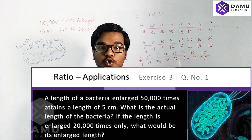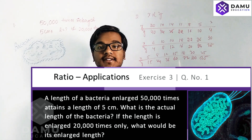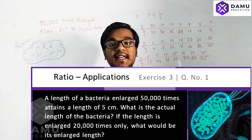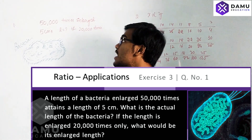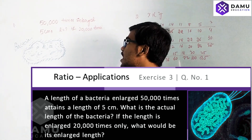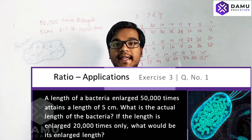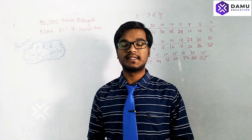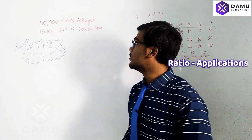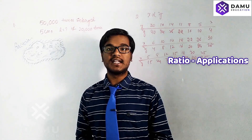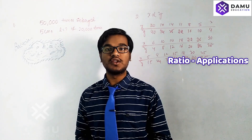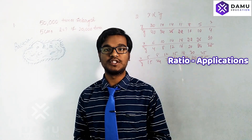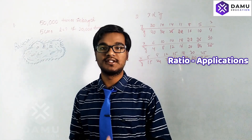When enlarged that many times, it attains a size of five centimeters. After that, how much length will it attain when enlarged 20,000 times? We can use the unitary method or the proportionate method. First I'll go with the proportionate method, then we'll solve using the unitary method.